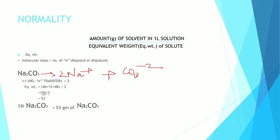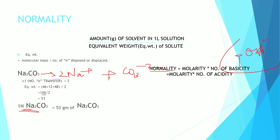106 divided by 2 equals 53. One normality Na2CO3 equals 53 grams. Normality equals molarity times basicity or acidity. Basicity means the number of OH- ions, acidity means the number of H+ ions.